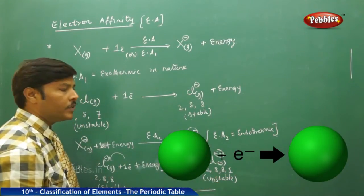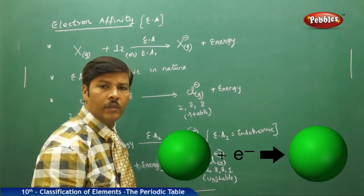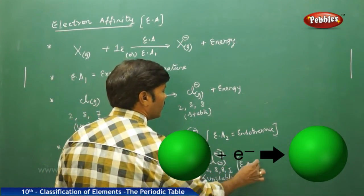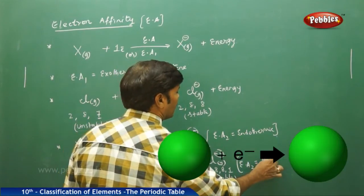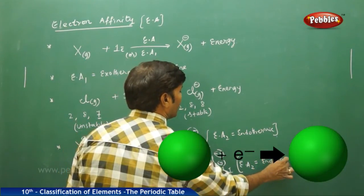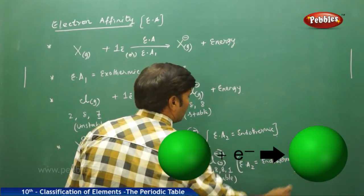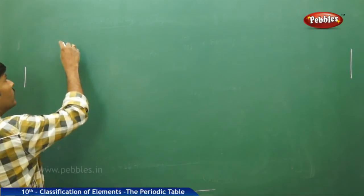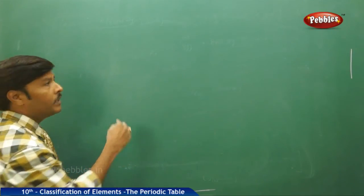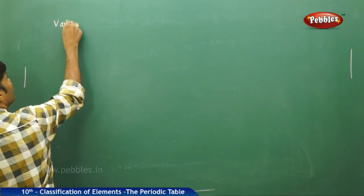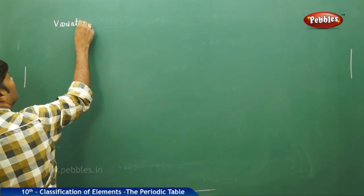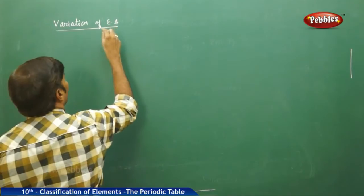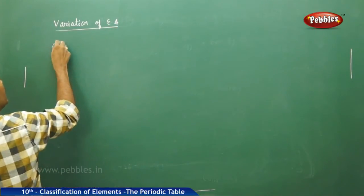Because you are converting the stable species to unstable state, we can confidently say that electron affinity two is endothermic. Now we are going to discuss the periodic trends of electron affinity — variation of electron affinity in periods.